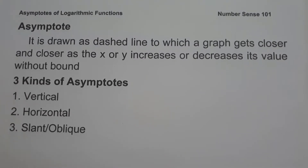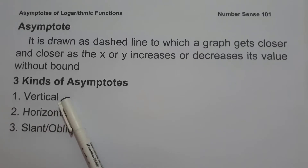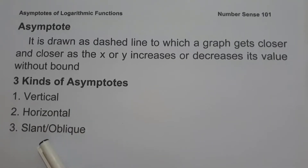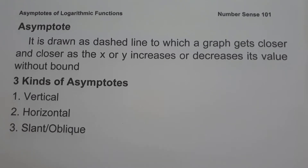There are three kinds of asymptotes: vertical, horizontal, and slant or oblique asymptote. However, logarithmic functions only have a vertical asymptote.